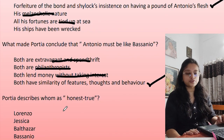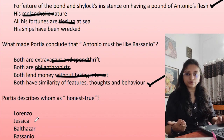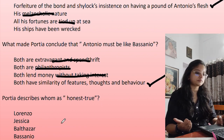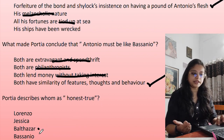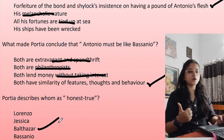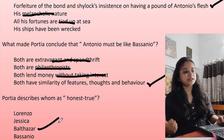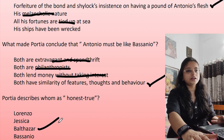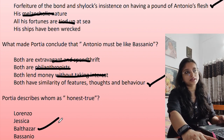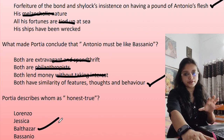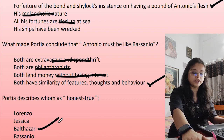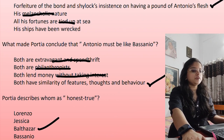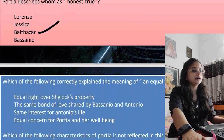Portia describes whom as 'honest' and 'true'? The options are Lorenzo, Jessica, Balthazar, or Bassanio. The answer is Balthazar. Balthazar was a very honest and loyal person who had loyally followed Portia, which is why he was entrusted with this sensitive task — he had to keep the secret and protect it. Because of his loyalty and honesty, he was chosen for such a mission.